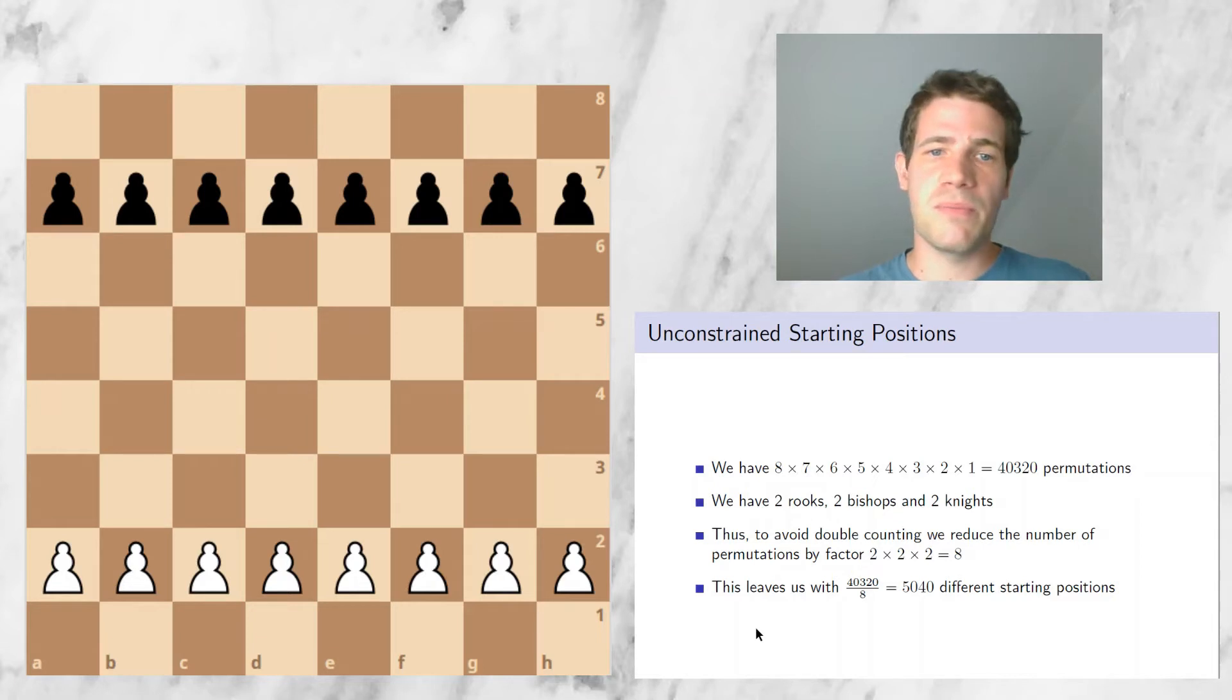The same is also true for the knights. Suppose you have a permutation in which you place knight number one on A1 and knight number two on B1, and there is also one position in which you do the exact reverse, and this is also counted in the permutations. To account for this double counting, we reduce the number of permutations by 2×2×2, which is equal to eight. So we get in total 5040 different starting positions if we do not constrain our problem further.